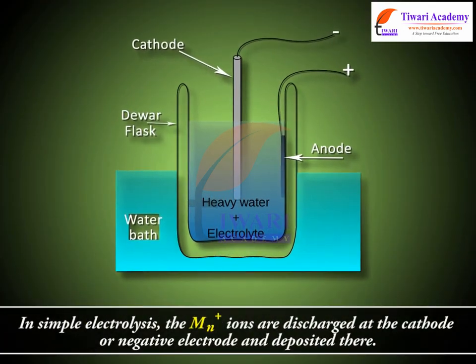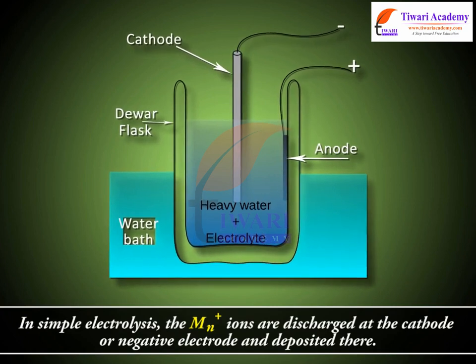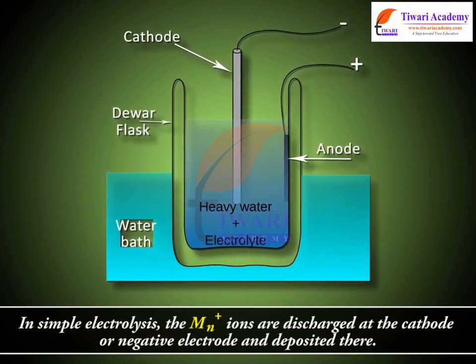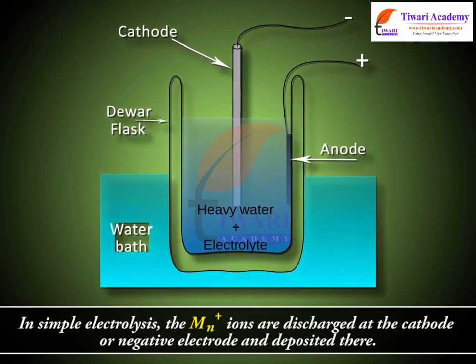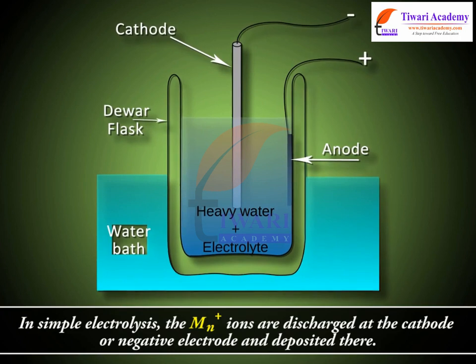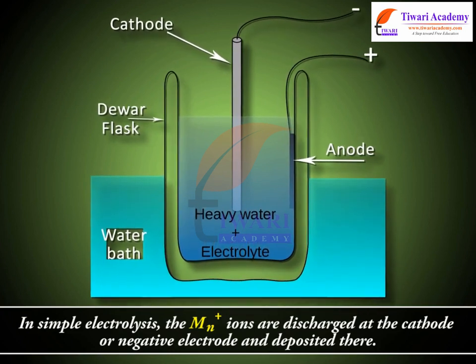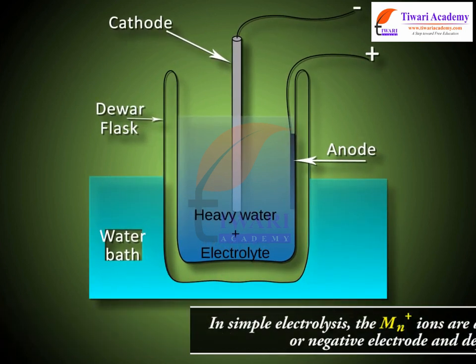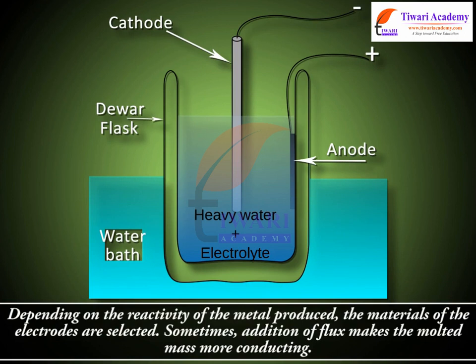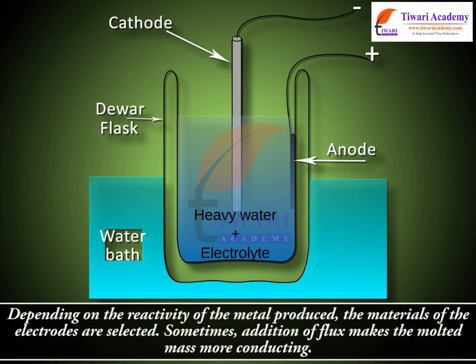In simple electrolysis, the Mⁿ⁺ ions are discharged at the cathode or negative electrode and deposited there. Depending on the reactivity of the metal produced, the materials of the electrodes are selected. Sometimes addition of flux makes the molten mass more conducting.